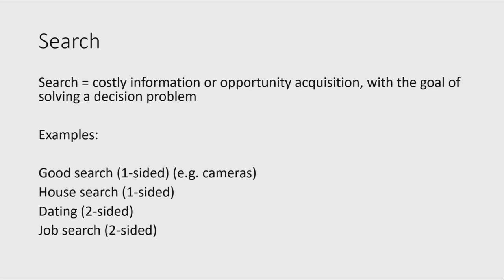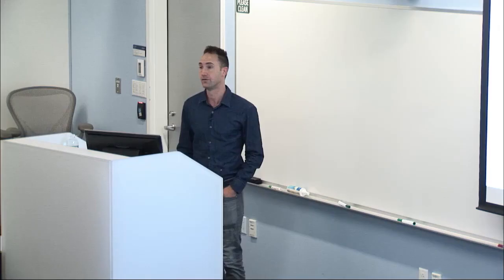When economists talk about search, they typically have a particular problem that a consumer or agent is trying to solve—like trying to buy something, find a job, find a house, or find a mate—something quite precisely defined. Search is the process by which one acquires opportunities or information that will allow them to solve that problem.